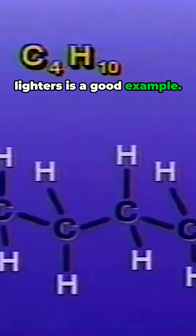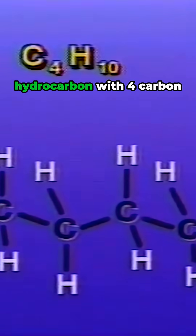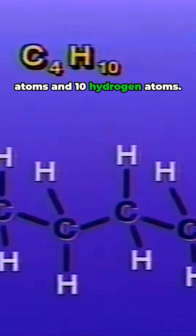Some have the same molecular formulas, but different structures. These are isomers. The butane in these lighters is a good example. Butane is a simple hydrocarbon with four carbon atoms and ten hydrogen atoms.